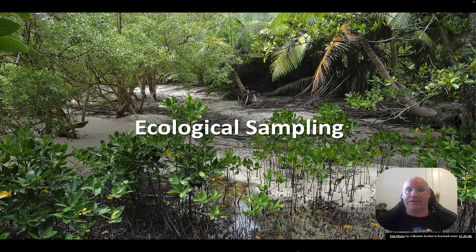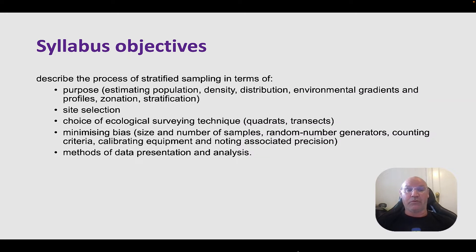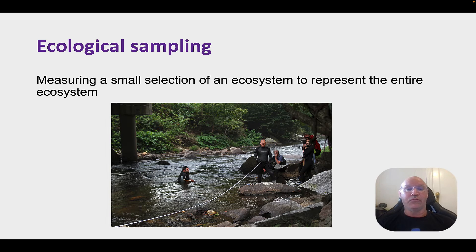So let's talk about ecological sampling. This video is probably going to be a little bit longer because we've got quite a few syllabus objectives to cover. First of all, what is ecological sampling? Well, sampling is when we take a small selection or measure a small selection of an ecosystem to represent the whole ecosystem. There's no way we could count everything in the ecosystem, so we select a small selection that is meant to be representative of the whole ecosystem.